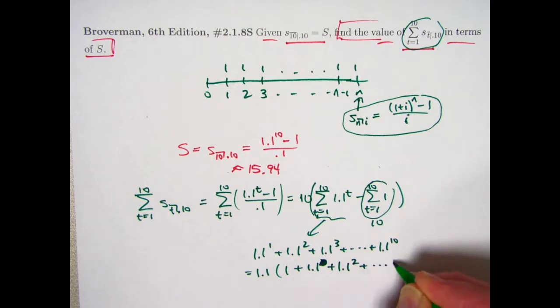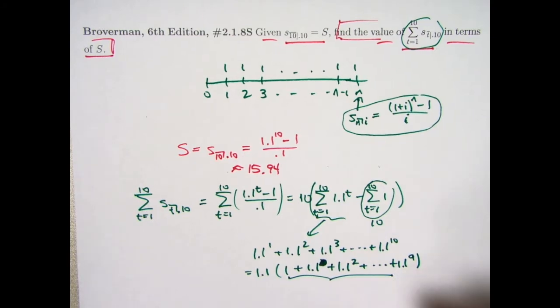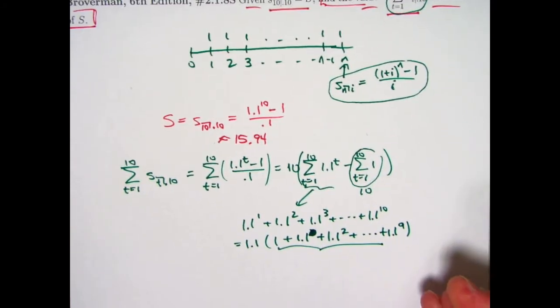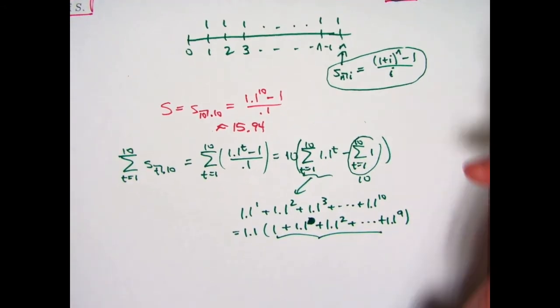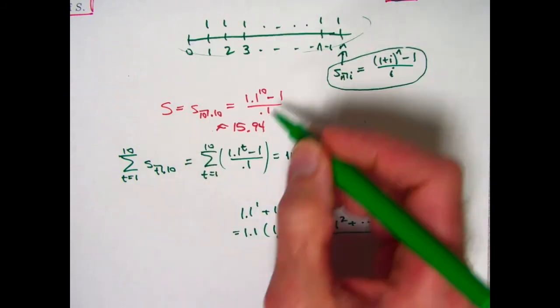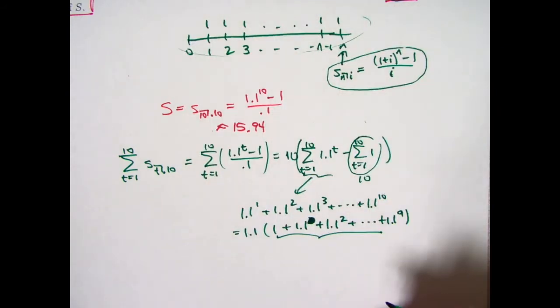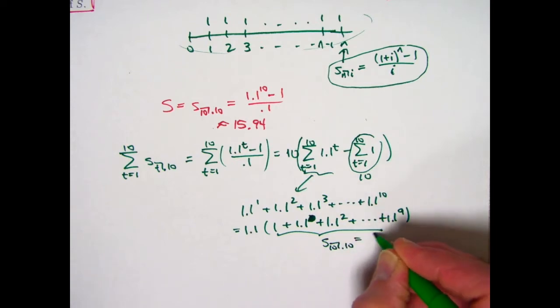The benefit of doing this is you see that this is a summation that's going to give you the future value of an annuity immediate at the time of the last payment based on 10 payments. It is exactly what we've got up here for the situation when n equals 10 and i equals 0.1. This is, in fact, s₁₀₍₀.₁₎. It is what we're just calling s.